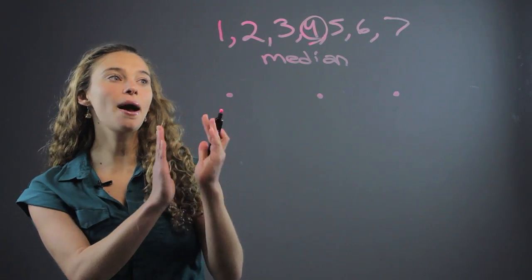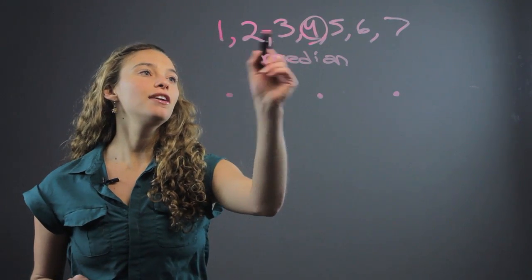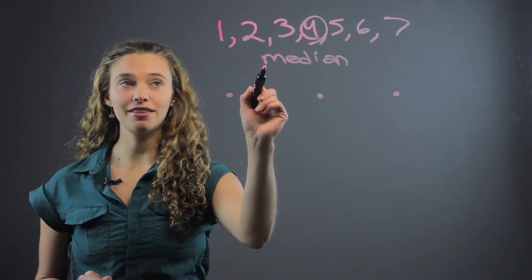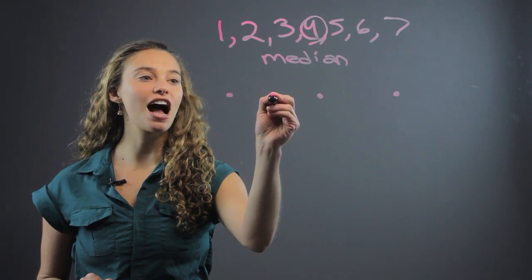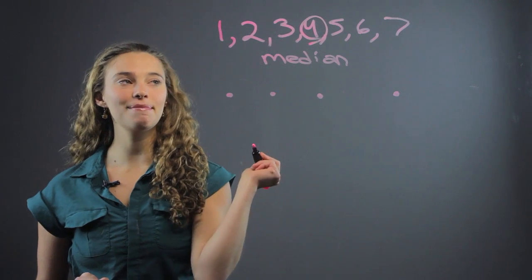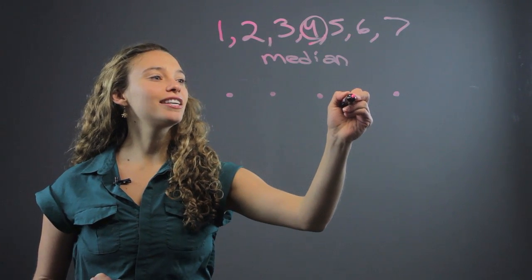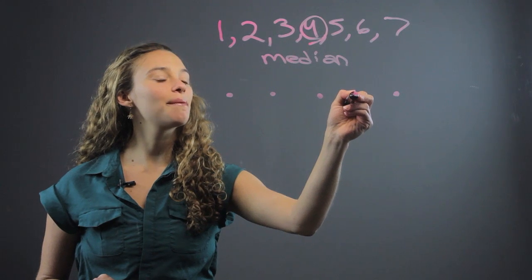Then you want to find the sub-medians. Between 1 and 4 it's actually right in the middle of 2 and 3, 2.5. So we'll just put the dot right in the middle. And then right in between 5 and 6, 5.5 is a sub-median there.